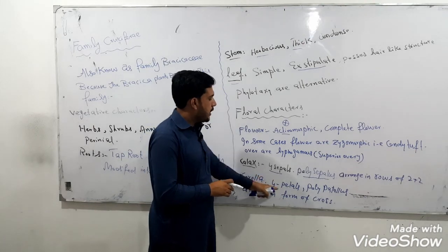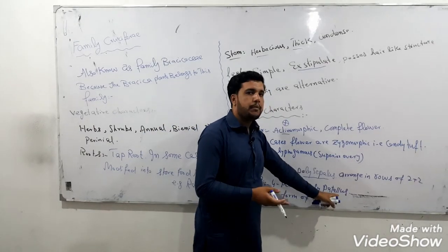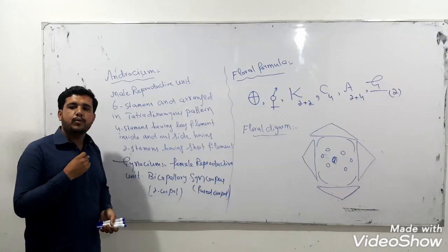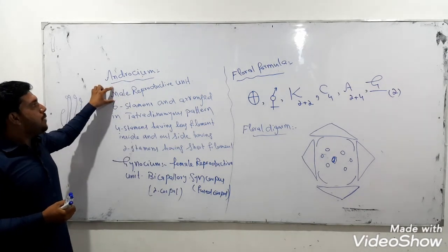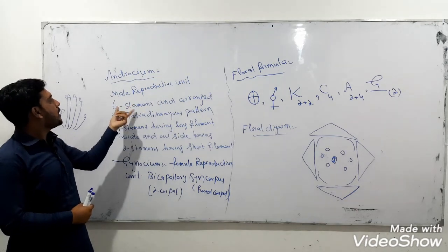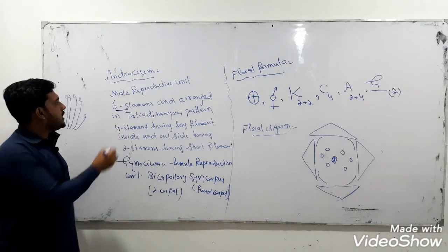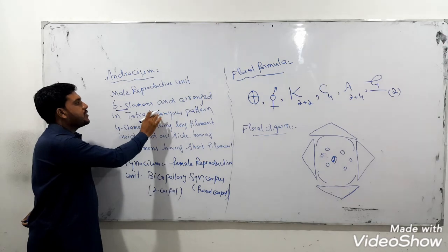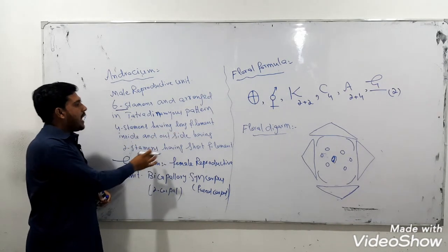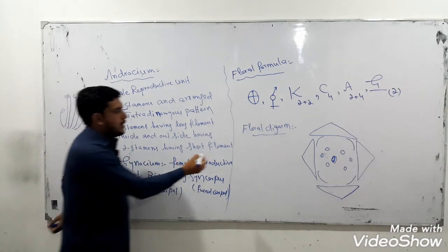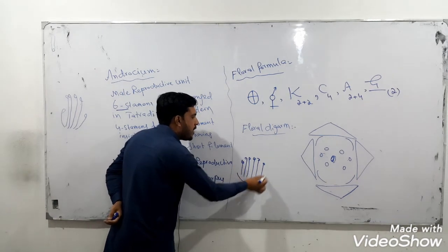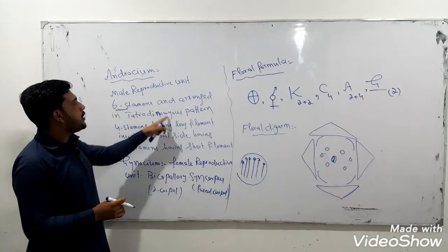The corolla — the petals in this plant are four. In some cases, there are four petals or petals may be more in number, arranged in a cross pattern. The androecium — the male reproductive unit of the plant — in family Brassicaceae or Cruciferae, the male reproductive unit contains six stamens. These stamens are arranged in a pattern known as tetradynamous — tetradynamous means four stamens having long filaments inside and two outside having short filaments.